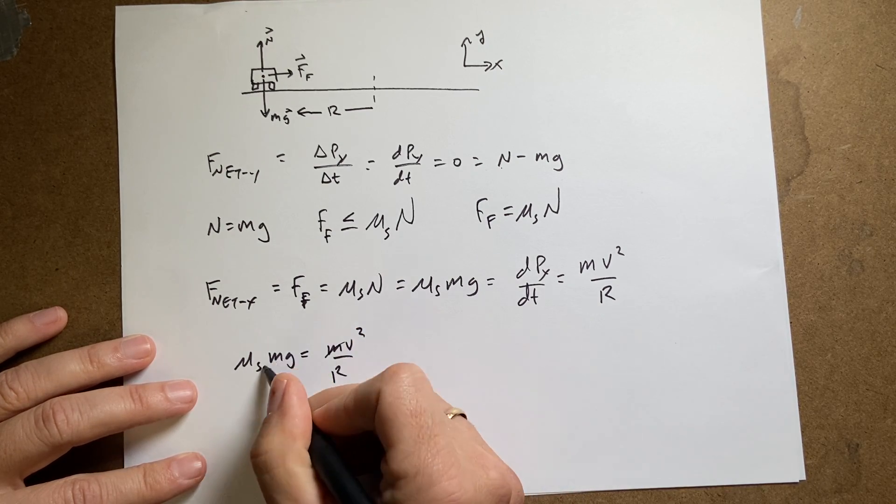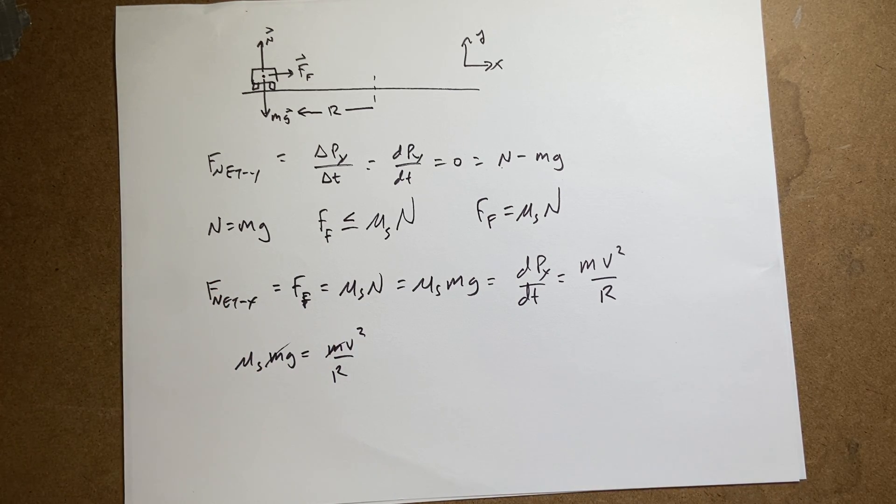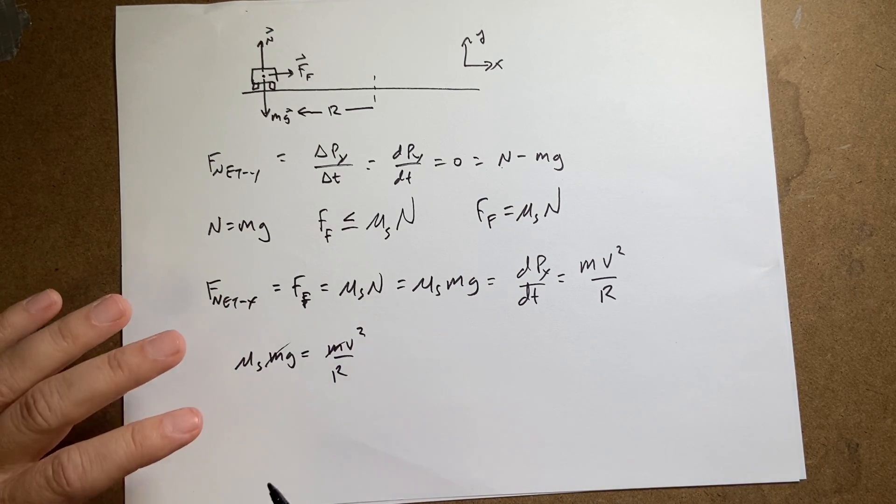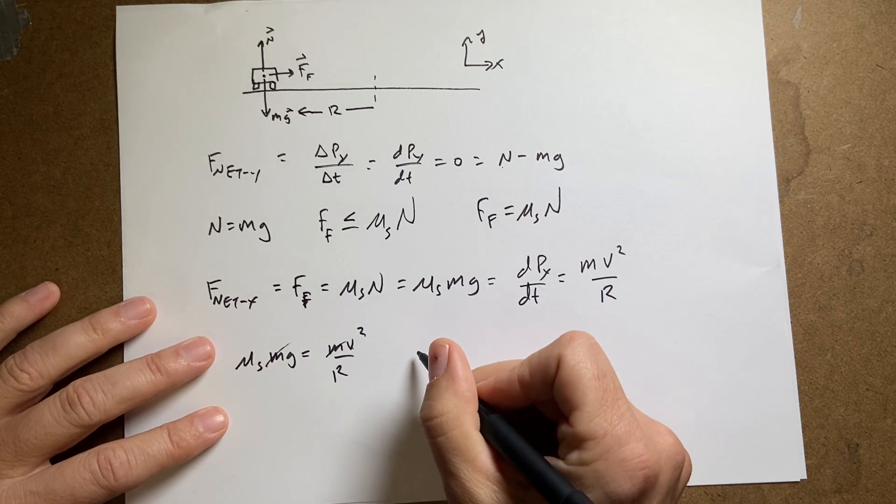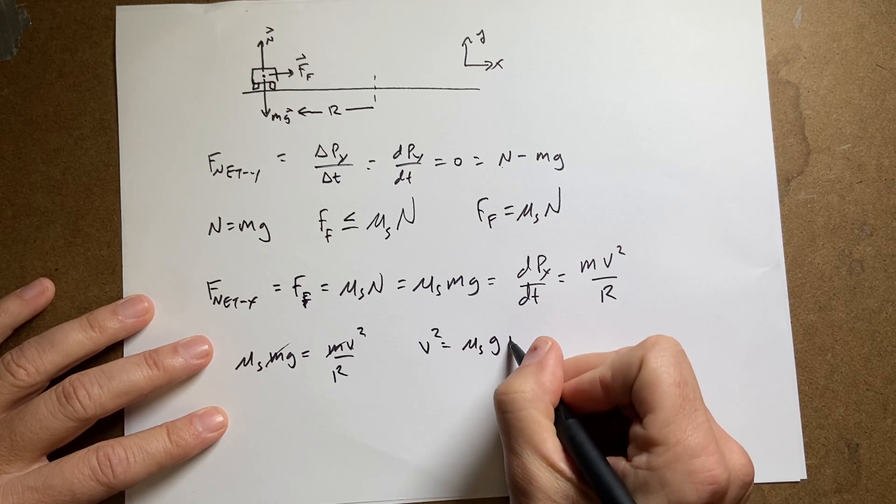Mu s mg equals m v squared over r. The m's cancel. Which is really cool because now I have this map and I can design this road and the speed limit. And it doesn't depend on the mass of the car. It does depend on the coefficient. I want to solve for v. So I'm going to say v squared equals mu s g r.